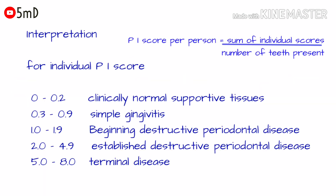The value can range from 0 to 8. The interpretation is as follows: for an individual PI score of 0 to 0.2, the clinical condition is clinically normal supportive tissue; for 0.3 to 0.9, simple gingivitis; for 1.0 to 1.9, beginning destructive periodontal disease; for 2.0 to 4.9, established destructive periodontal disease; and for 5.0 to 8.0, terminal disease.